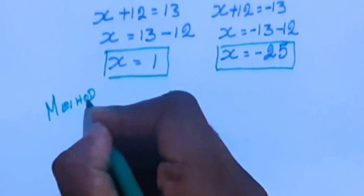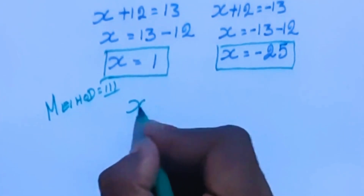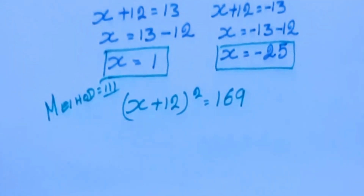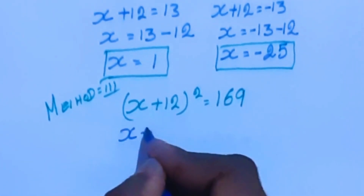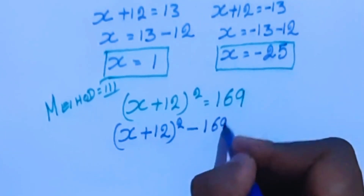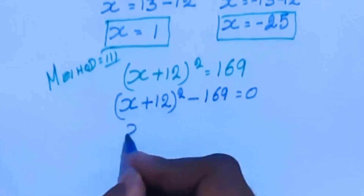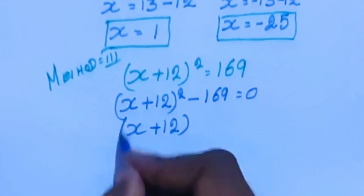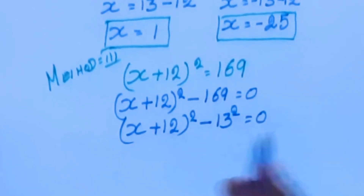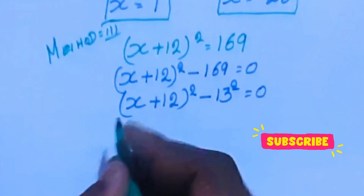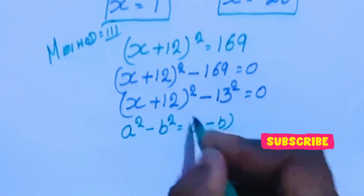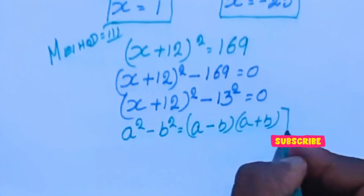Method 3. The equation is x plus 12 whole square equal to 169. Moving to the left hand side: x plus 12 whole square minus 169 equal to 0. Since 169 is 13 squared, this becomes x plus 12 whole square minus 13 square equal to 0. We apply the difference of squares formula: a square minus b square equal to (a minus b)(a plus b).